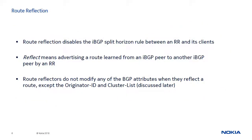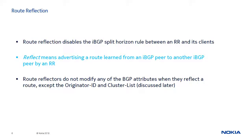When a full mesh of iBGP sessions is used, the iBGP split horizon rule is applied, meaning that a router does not advertise a route learned from an iBGP peer to other iBGP peers within the AS. However, when an RR is used, the iBGP split horizon rule is disabled for the RR clients. The RR can advertise a route learned from an iBGP peer to another iBGP peer — in such a case we say that the RR is reflecting the route. Note that route reflectors do not modify any BGP attributes when they reflect a route, except for the originator ID and cluster list attributes, which are discussed later.